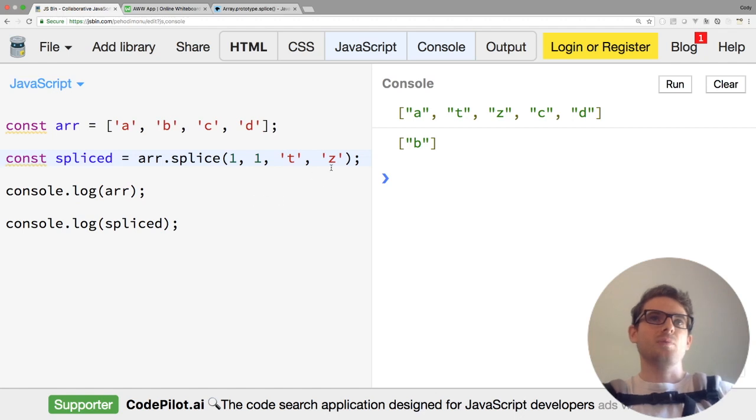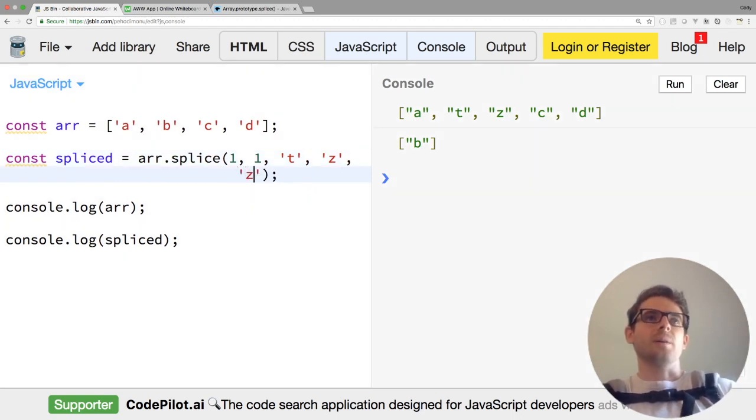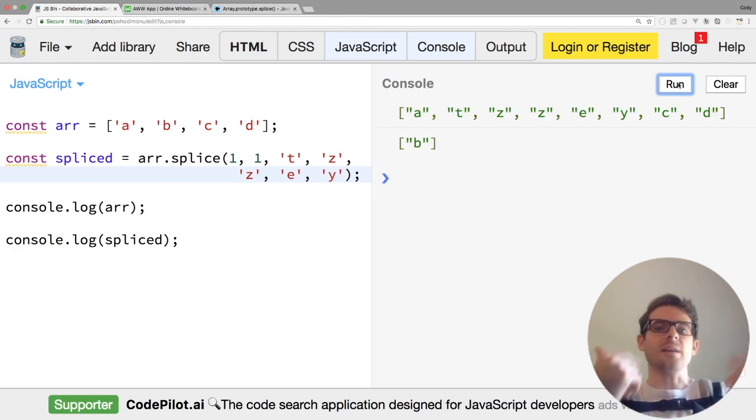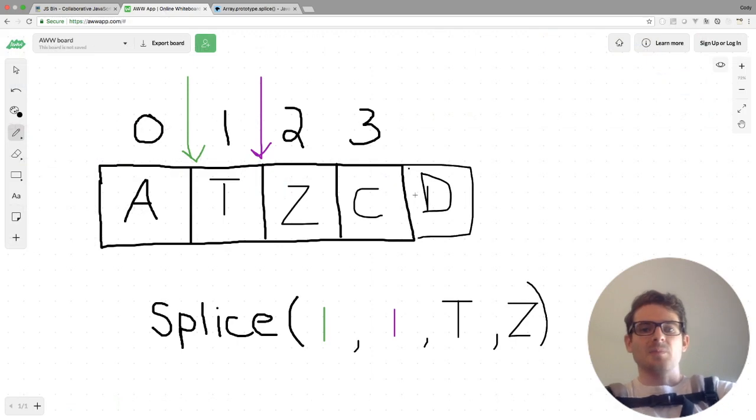And just to kind of demo, you can put as many additional arguments as you want here. So I could put like Z, E, Y. And that's going to add that list into your original array. So that kind of sums up the splice method.